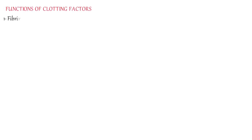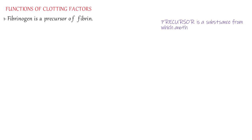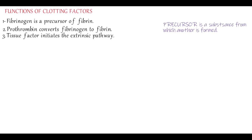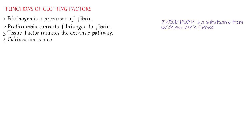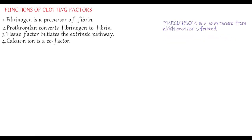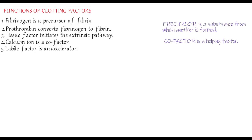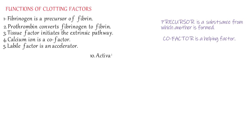Fibrinogen, which is factor 1, is a precursor of fibrin — fibrin is the end product of the whole coagulation process. Prothrombin, factor 2, helps to convert fibrinogen into fibrin. Factor 3, tissue factor or thromboplastin, is an initiator of the extrinsic pathway. Factor 4 is calcium ion, and calcium ion is a cofactor — a cofactor is an organic or inorganic molecule that binds to an enzyme and helps to facilitate catalysis. So a cofactor is simply a helping factor.